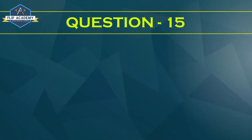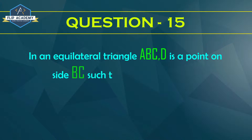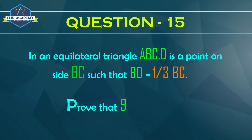Triangle exercise 6.5, question number 15. In an equilateral triangle ABC, D is a point on side BC such that BD is equal to 1/3 BC. Prove that 9AD² is equal to 7AB².